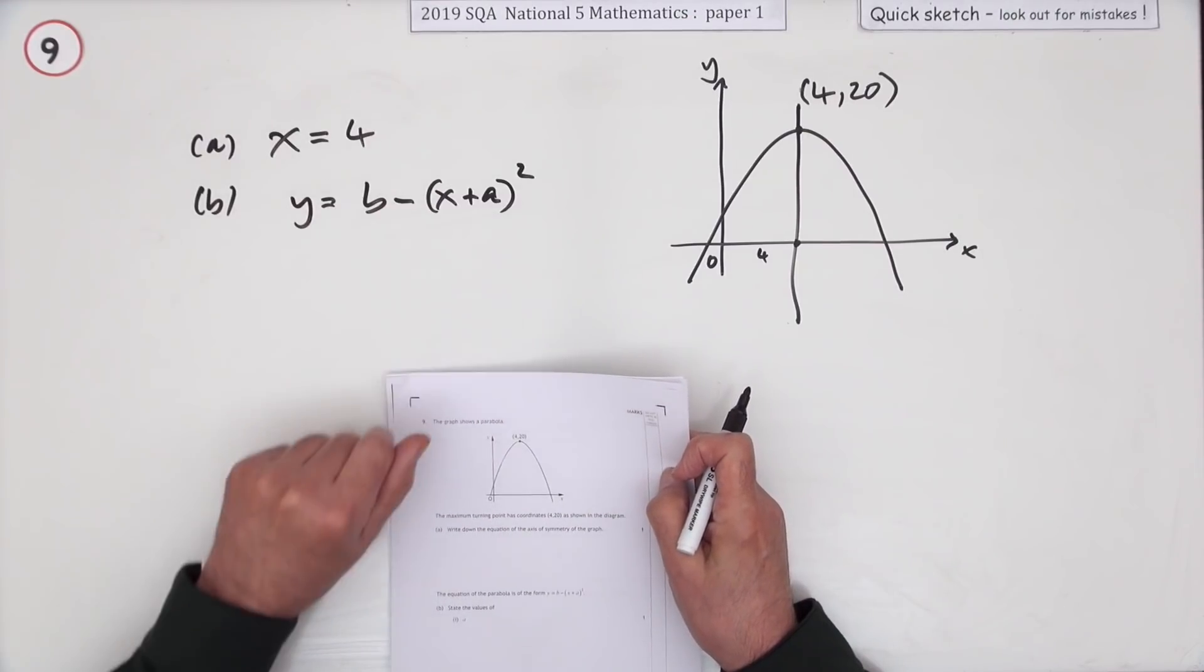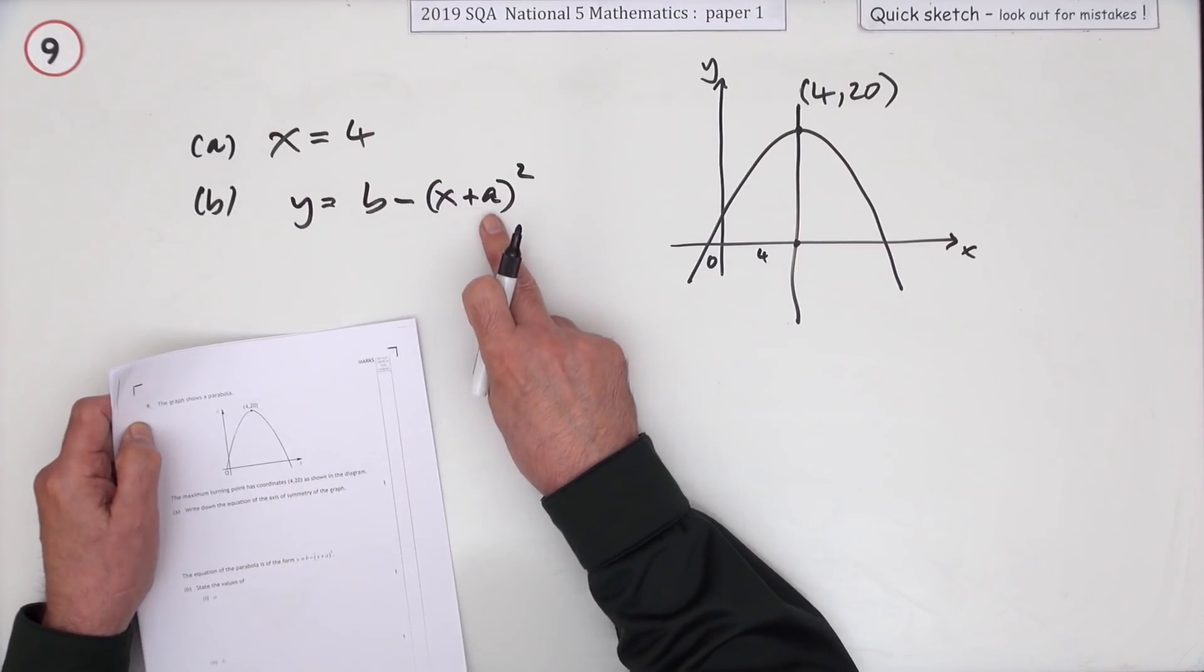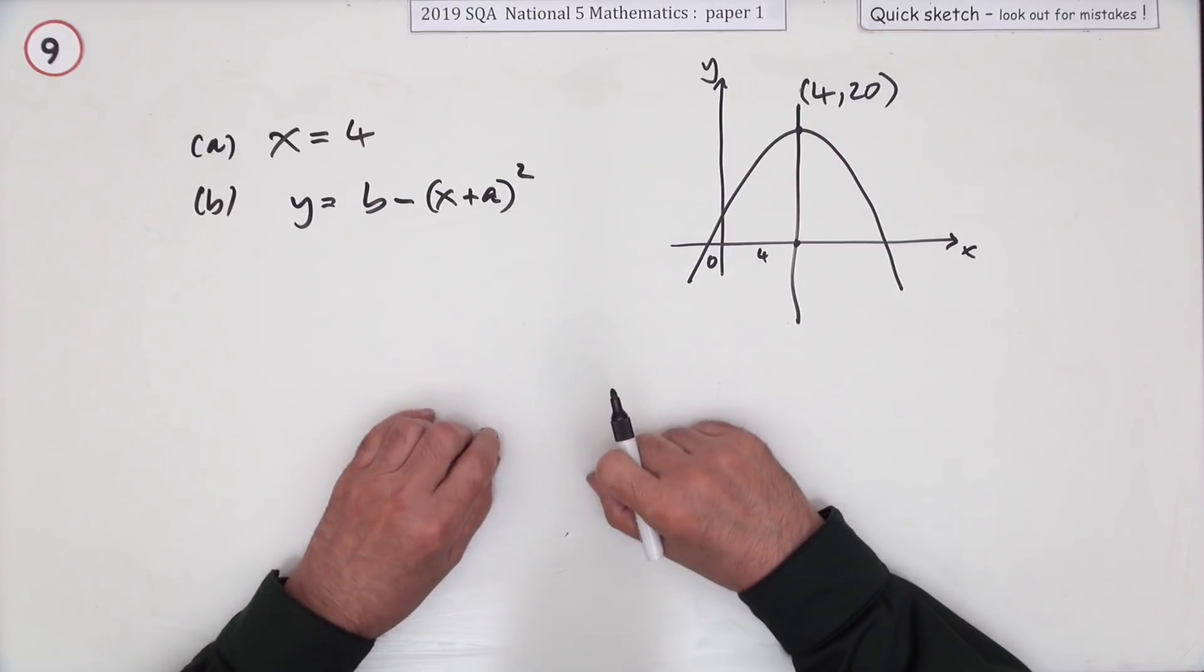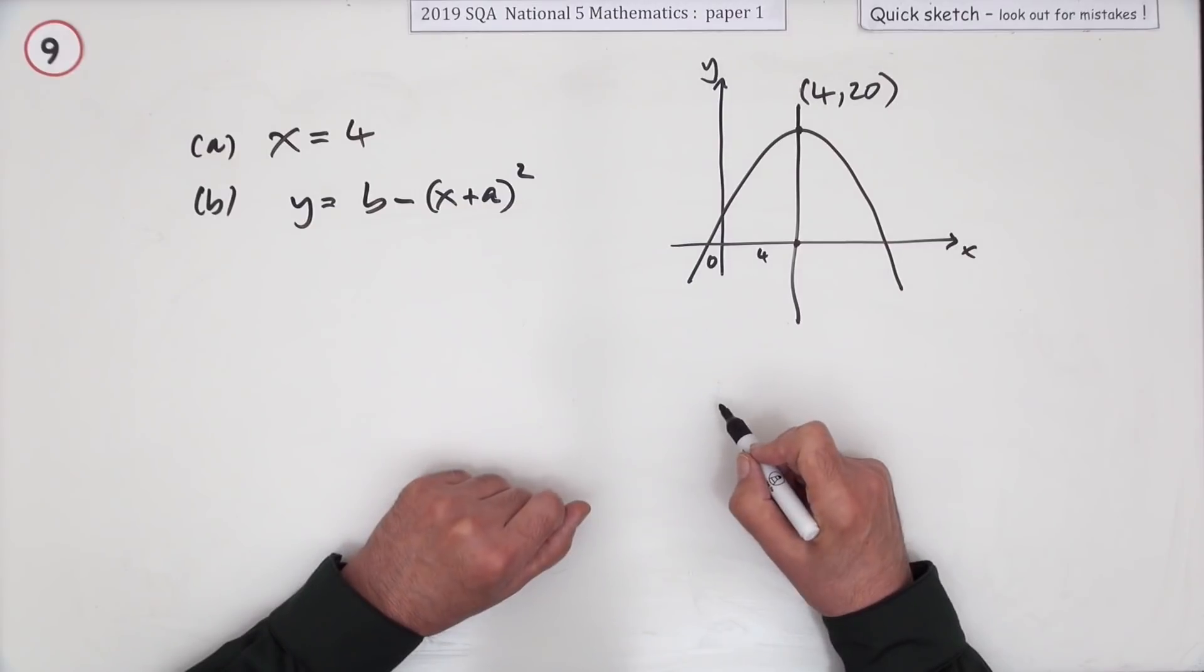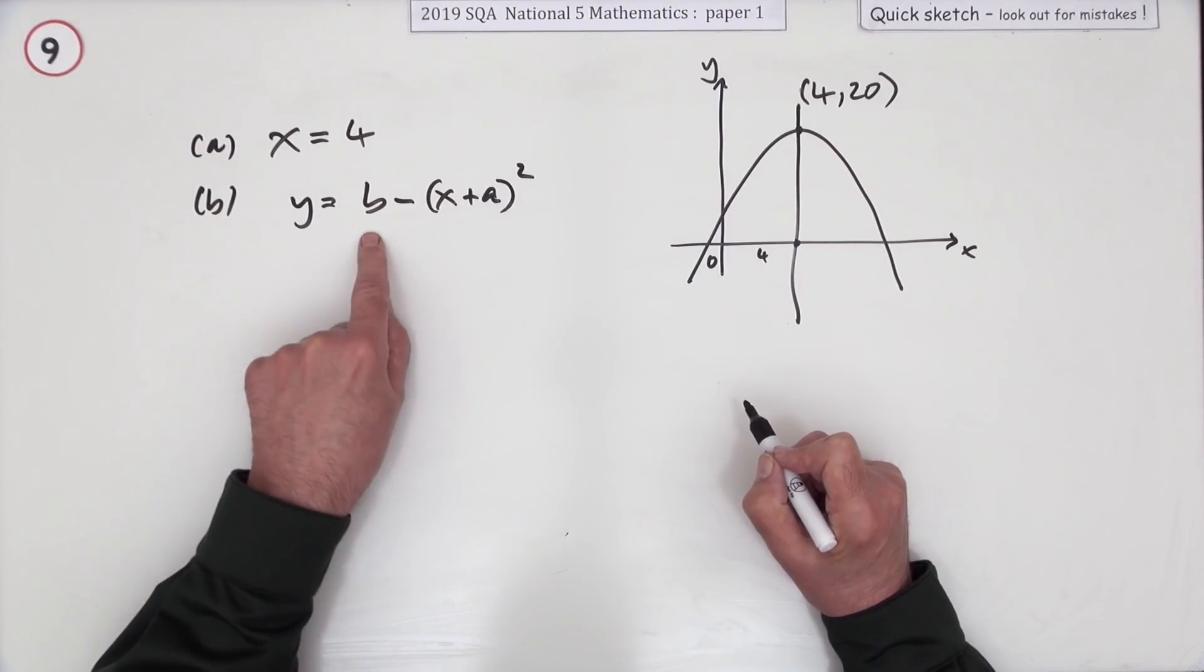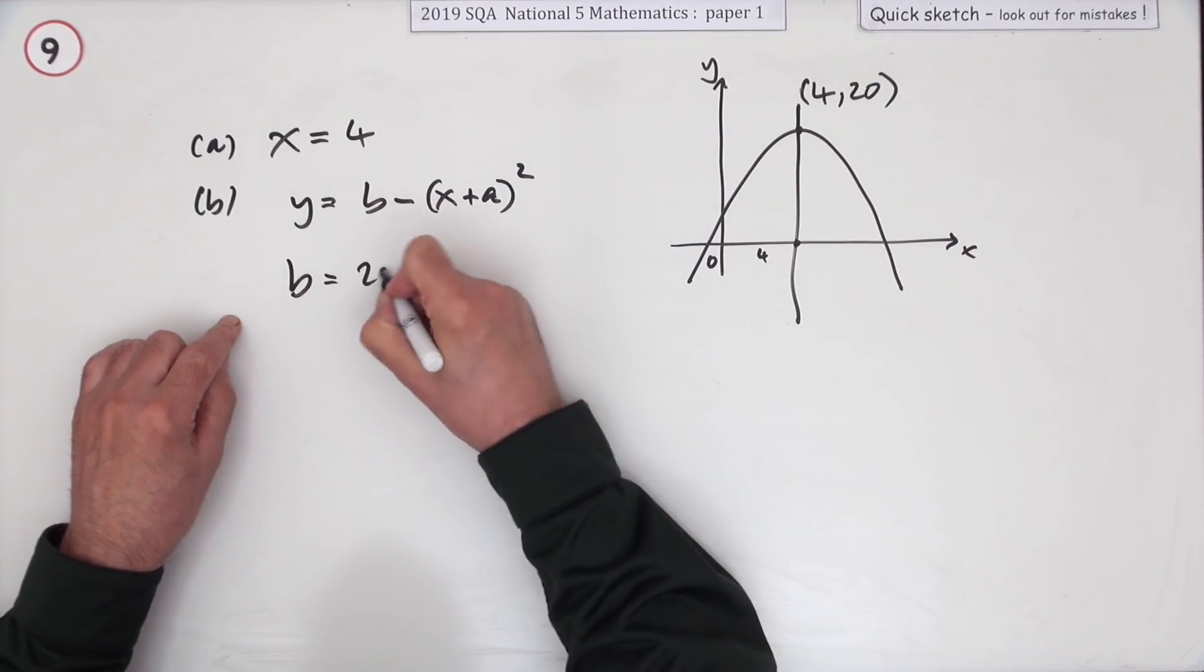You might not like that because I've written that the other way around, but you've still got the x part in here and you have to say what a and b are. This equation will describe any point. The biggest this will ever get to is when the bracket is 0, and the biggest it'll ever get to is 20, so that b must be the 20.